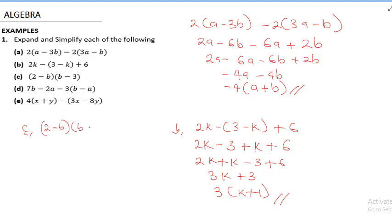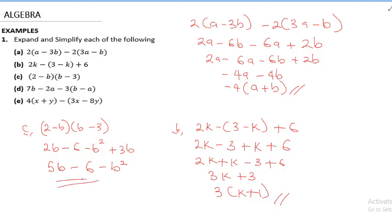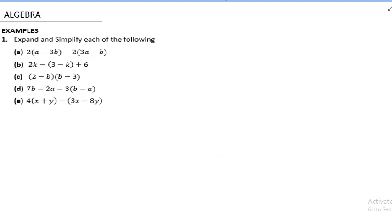For question c, we are solving 2(b − 3) − b(b − 3). Expanding: 2 times b is 2b, and 2 times minus 3 is minus 6. Then minus b times b is minus b squared, and minus b times minus 3 is plus 3b. Collecting like terms: 2b + 3b gives 5b, so the answer is minus b squared + 5b − 6.